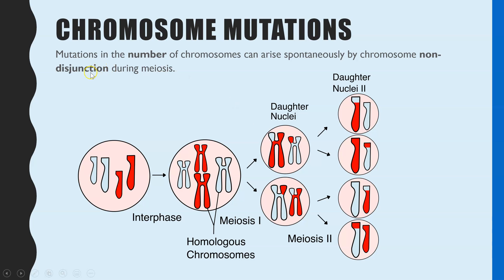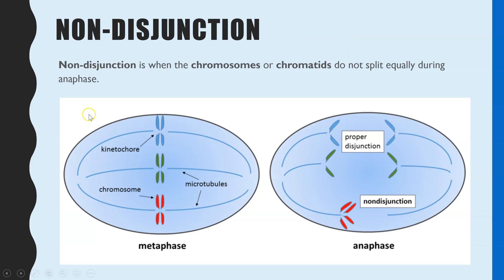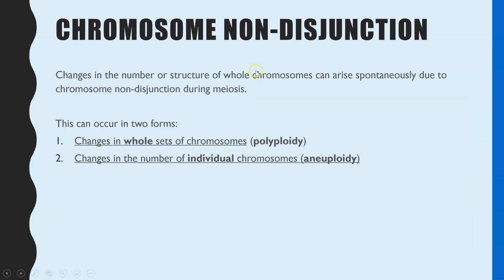So we'll go through what non-disjunction is. This is when either the chromosomes in meiosis 1 do not separate equally, or the chromatids in meiosis 2 do not separate equally in anaphase. And as a result, the resulting gamete, which is made in meiosis, will not have the correct number of chromosomes. There are two types of effects that non-disjunction can have: polyploidy or aneuploidy.